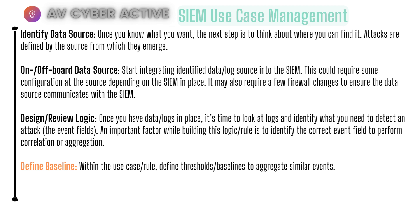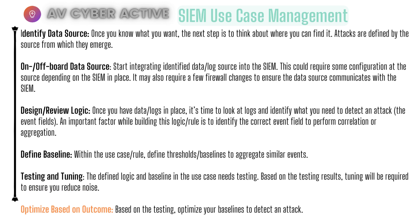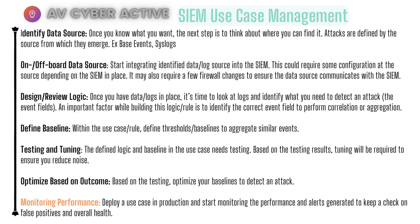Most SIEM solutions come with some default aggregation settings. You might want to fine-tune them according to your own SIEM and tailor it to your environment. Next is testing and tuning — the defined logic and baseline in the use case needs testing, and based on the results, tuning will be required to reduce noise and concentrate on only the security events. Next is to optimize based on your outcome, then monitor performance. Once your SIEM use case is deployed, you want to monitor it for performance, keep it running at optimal requirements, track false positives, and maintain the overall health of your SIEM.